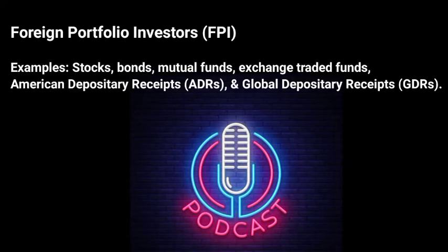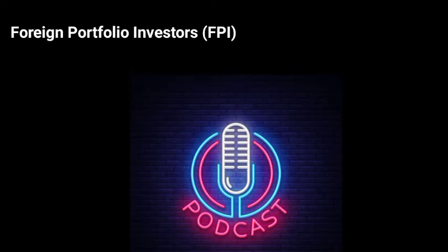Examples of FPI include stocks, bonds, mutual funds, exchange traded funds, American Depository Receipts, and Global Depository Receipts. FPI is part of a country's capital account and is shown on its Balance of Payments (BOP). The BOP measures the amount of money flowing from one country to another over one monetary year.